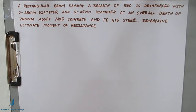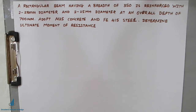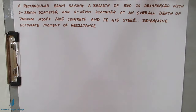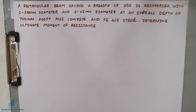In today's video we shall start with the analysis of beams — particularly the singly reinforced beam. A singly reinforced beam is simply a beam having steel in the tension zone only. There is another type called a doubly reinforced beam, which we shall see in later videos. Analysis means finding the ultimate moment of resistance of that particular beam.